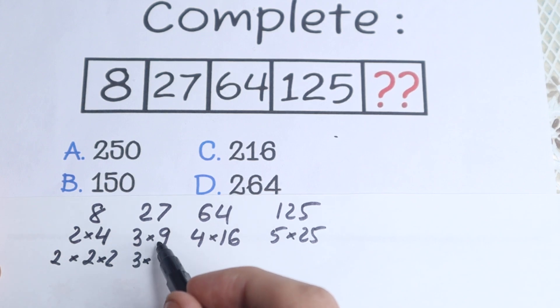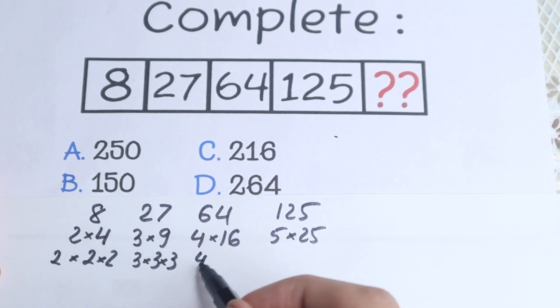27, 3 times this 9 as 3 times 3. 64 as 4 times 4 times 4, because we write 16 as 4 times 4, this 9 as 3 times 3, this 4 as 2 times 2.